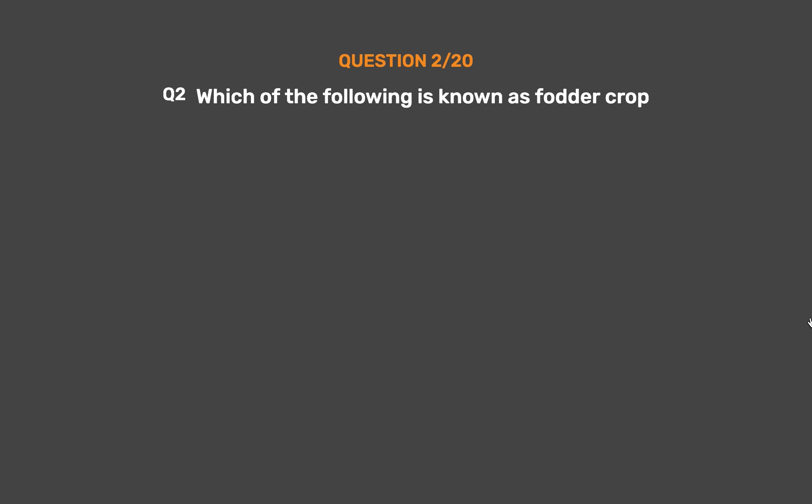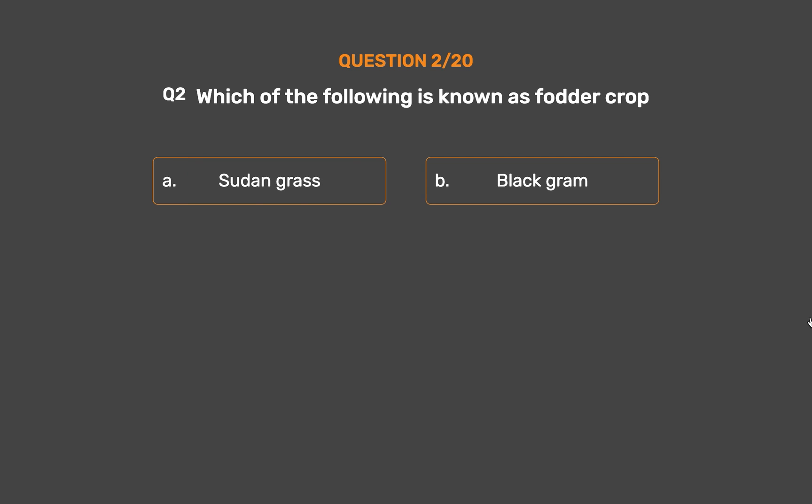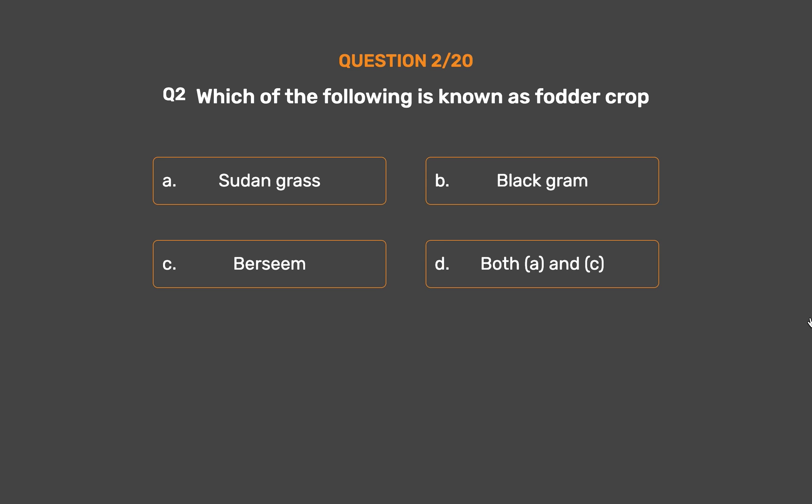Question No. 2. Which of the following is known as a fodder crop? Option A: Sudan grass. Option B: Black gram. Option C: Berseem. Option D: Both A and C.